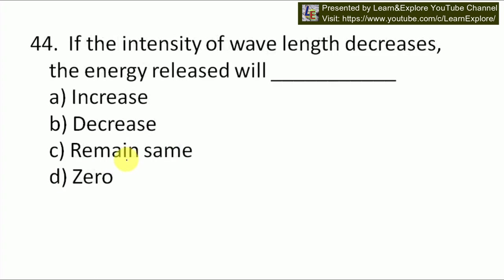Next question: if the intensity of wavelength decreases, the energy released will increase, decrease, remain same, or become zero? Our answer will be A — if the intensity of wavelength decreases, the energy released will increase, because the relation between wavelength and energy released is inversely proportional. That is, if wavelength increases, energy produced decreases. This is given by Planck's theory. So the relation between wavelength and energy released is inversely proportional.